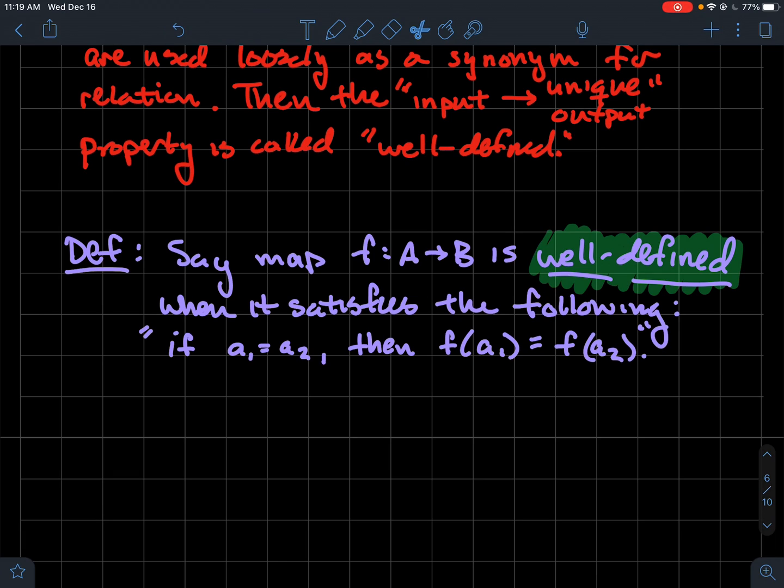So we'll say that a map or a relation is well-defined when it satisfies that property, that each input has a unique output. And how you'd write that in symbols is if a1 is equal to a2, where a1 and a2 are perhaps elements of the domain, then it has to correspond to the same element in the range.